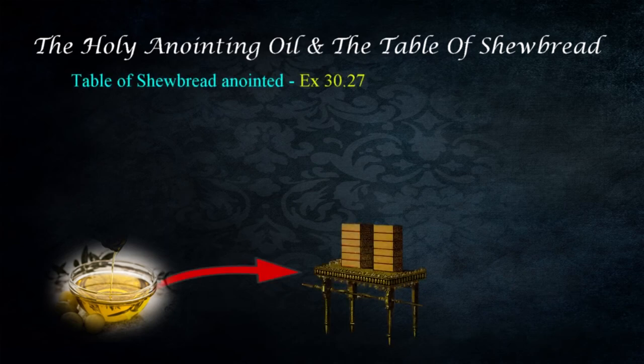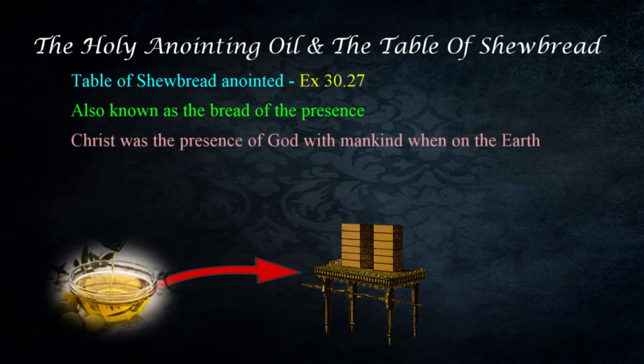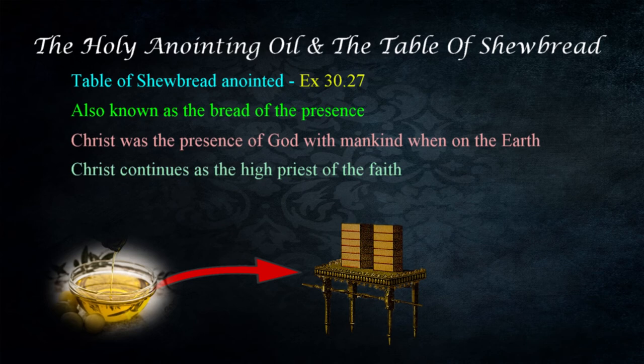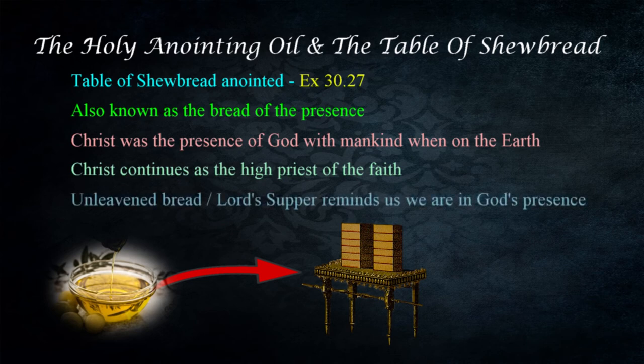The table of showbread was anointed with the holy anointing oil in Exodus 30:27. The bread, also known as the bread of the presence, represented the face of God with his people. Christ was the presence of God with mankind when he was on the earth and continues as the high priest of the faith at the right hand of God today. The Lord's Supper, instituted by Christ on the night of his betrayal, utilized unleavened bread to represent the body that was created to be offered on the cross as the final sacrifice for sin. Christ continues to bring us into the presence of God as his children, forming the connection we see with the bread of the presence.